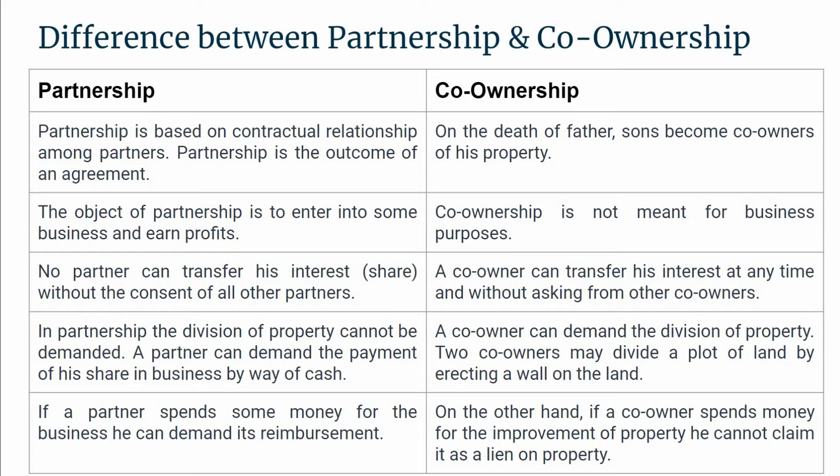On the other hand, in co-ownership, on the death of a father, the sons become co-owners of his property. Suppose a father has a flat, apartment, or plot of land — after his death, if he has two sons, then both sons become the co-owners of that property.